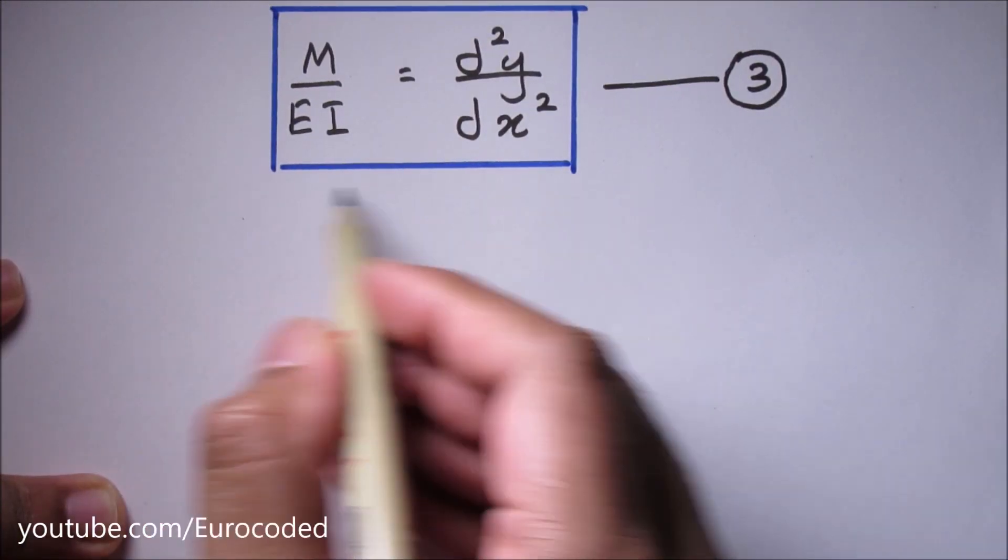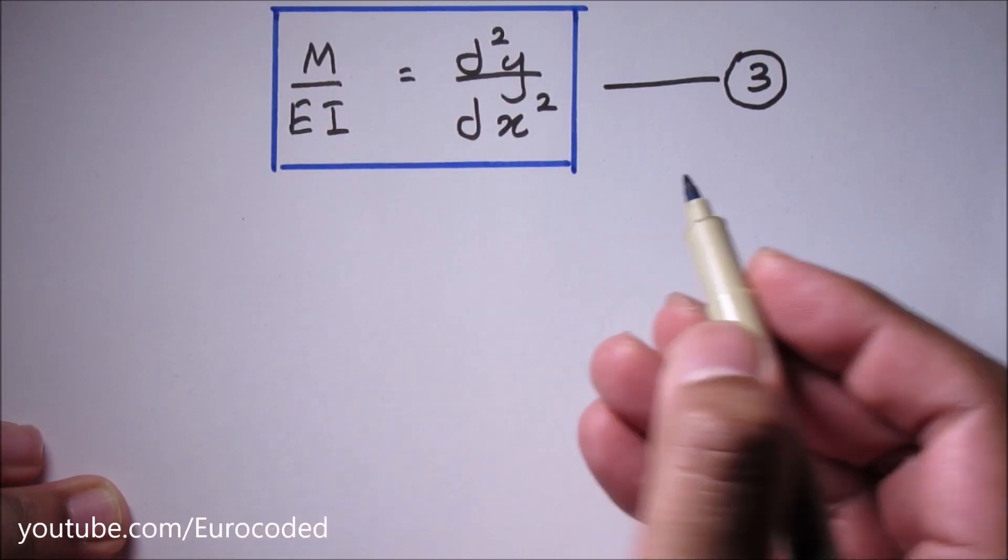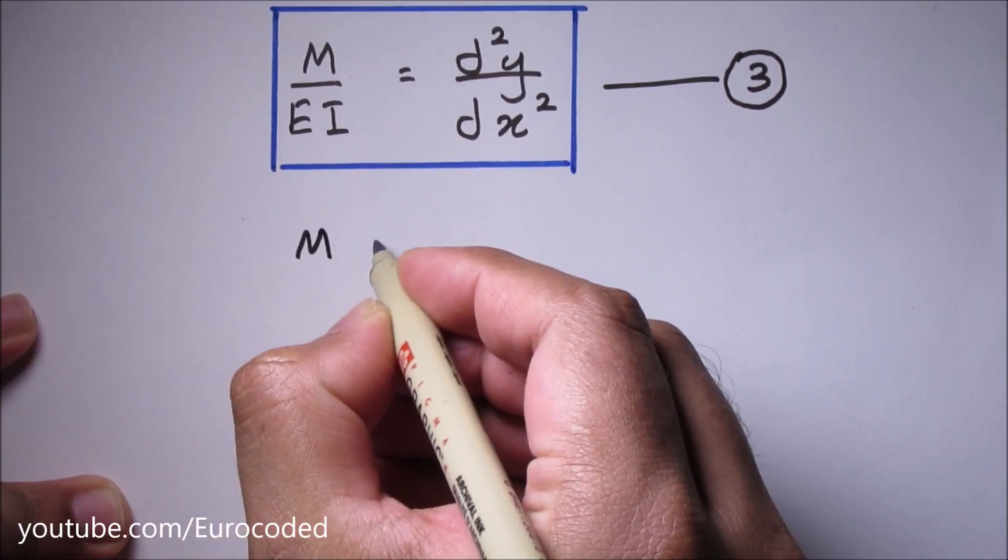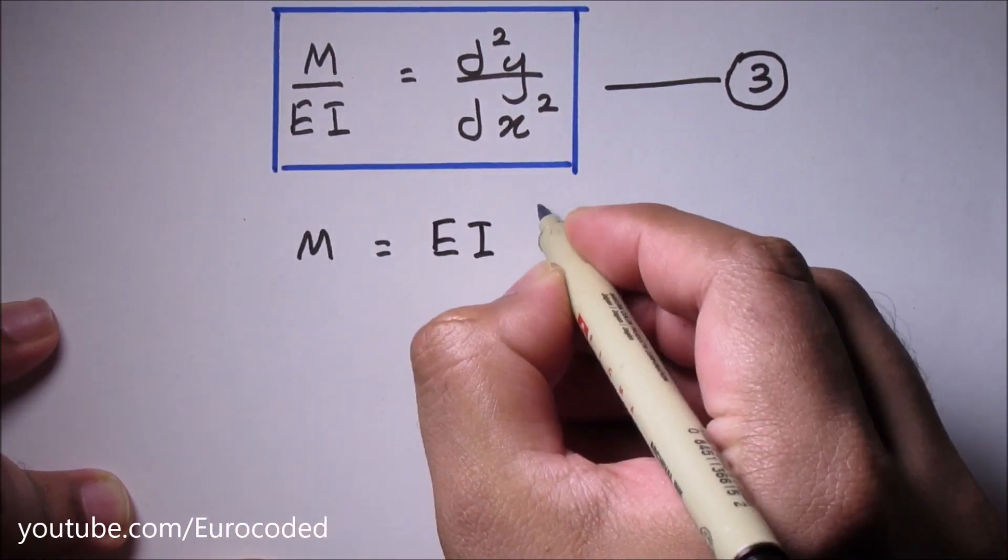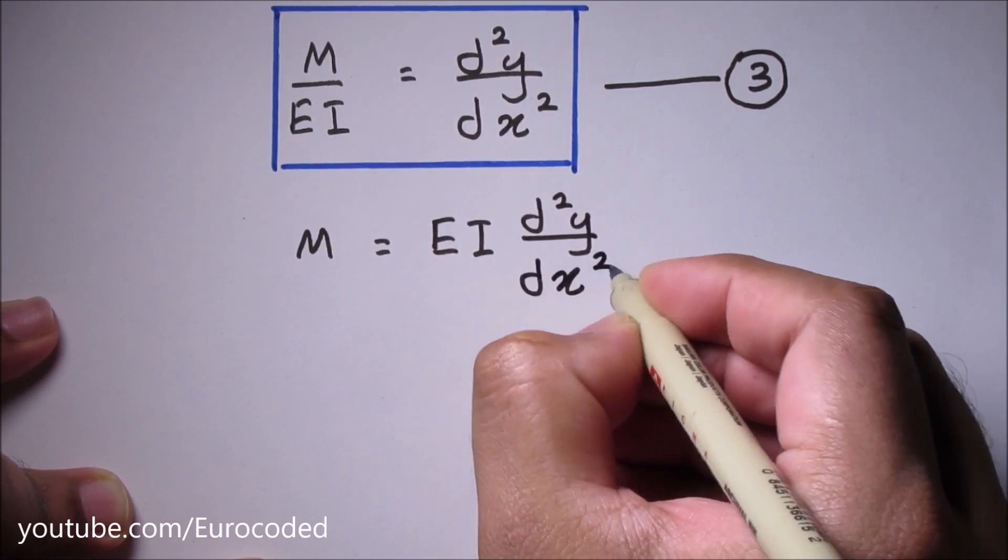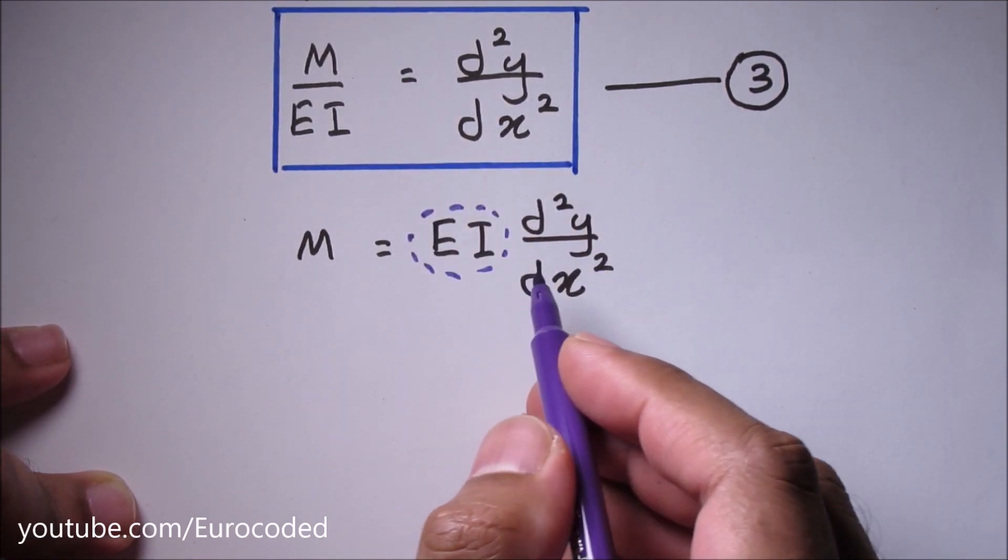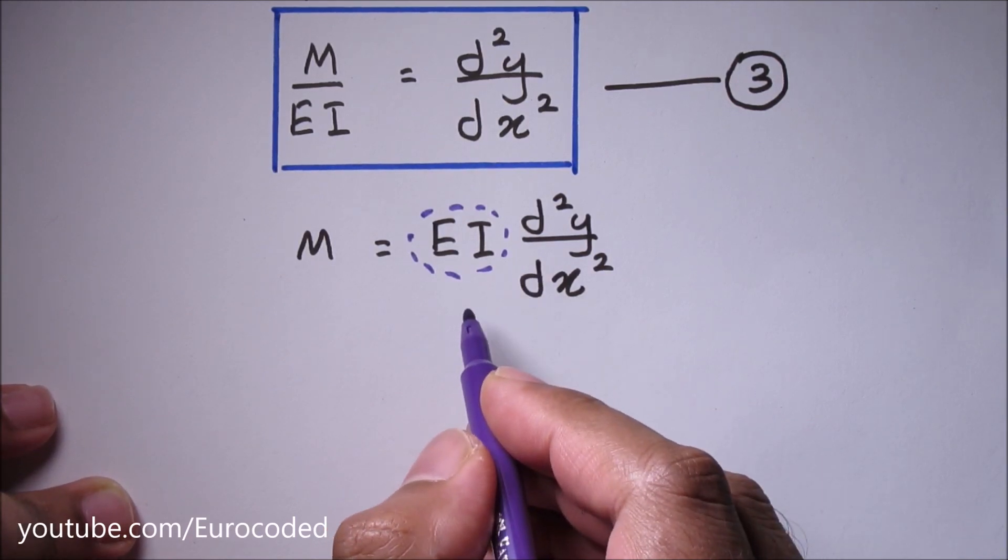When we rearrange this equation, a commonly known form we can write M is equal to EI times d squared y over dx squared. The product EI is known as the flexural stiffness of the beam.